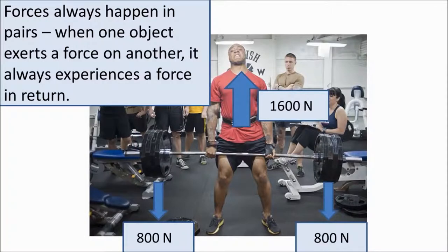Now Newton discovered three laws of motion, and the third of these says that for every action there is an equal and opposite reaction. So when one object exerts a force on another, it always experiences a force in return. And those forces are equal in magnitude, so they're the same strength, and they're opposite in direction.